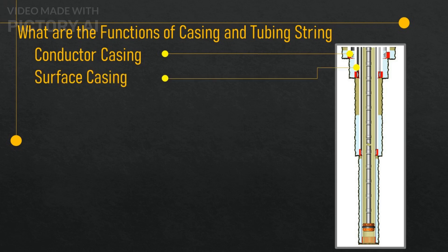Surface casing string: this is the second casing string that is installed in the well, and it is usually cemented inside the conductor casing string. The surface casing string serves as a primary barrier against the formation fluids and pressures, and it also isolates the freshwater aquifers from the wellbore. The surface casing string may have a diameter of 18 to 26 inches (46 to 66 centimeters) and a length of 1,000 to 3,000 feet.